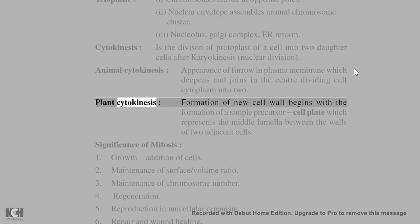(6) Plant cytokinesis: Formation of new cell wall begins with the formation of a simple precursor cell plate which represents the middle lamella between the walls of two adjacent cells.